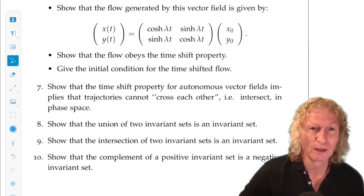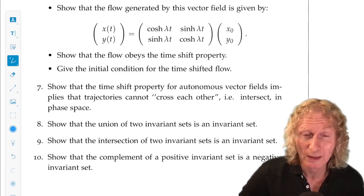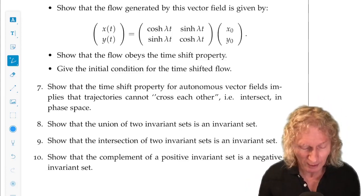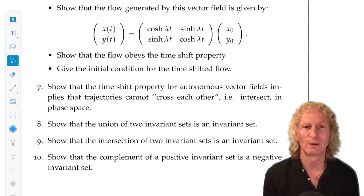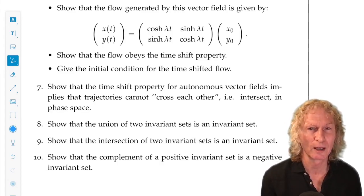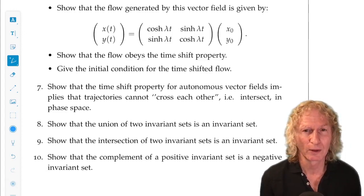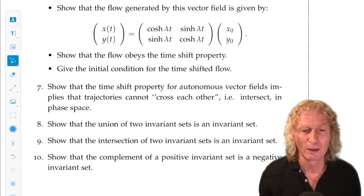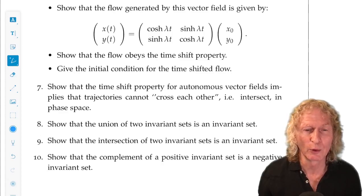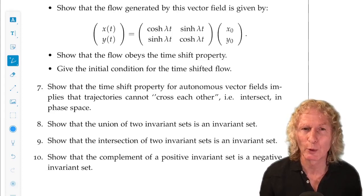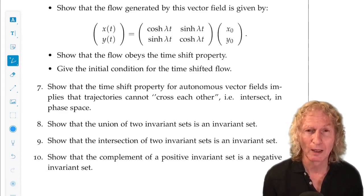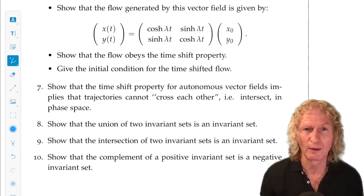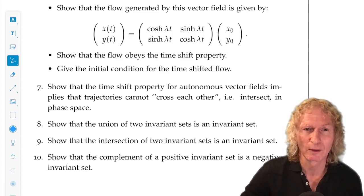Problem seven is to ask you to prove generally that trajectories cannot cross each other for autonomous vector fields. And you have to make mathematical what you mean by not cross each other. And this is a good practice because you want to be able to prove things with mathematics. So you have to cast them in the form where you can give a mathematical proof. The time shift property, the flow property, property three is something you use for this. It makes it fairly straightforward.